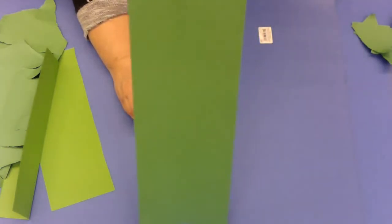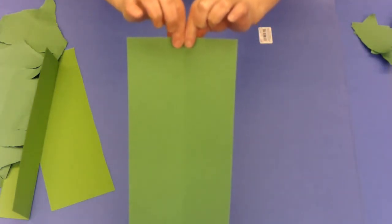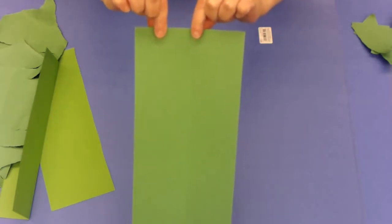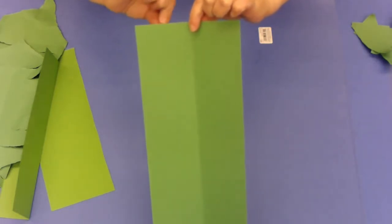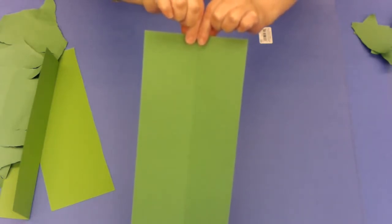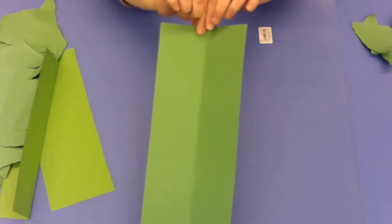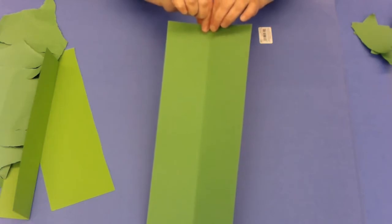And then your second hand is going to go right next to it. A lot of times kiddos want to try to tear the paper over here. It needs to be right flat up against the other hand. That is like the key direction that I can give you.